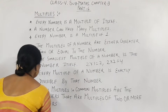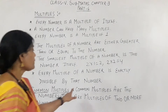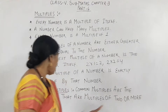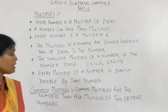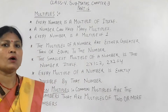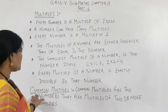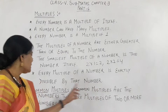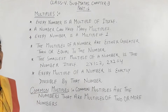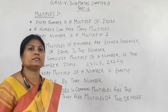Now, one more topic: common multiples. What do you mean by common multiples? Common multiples are the numbers that are multiples of two or more numbers. If we take two numbers and list all their multiples, some of them will be common. We will understand this by example.